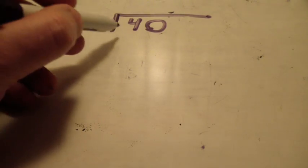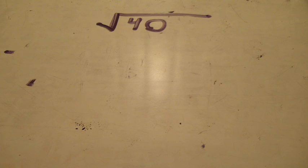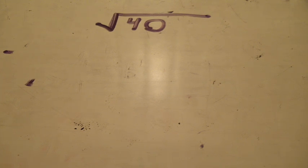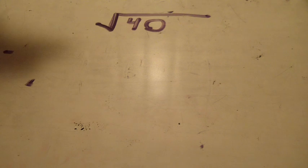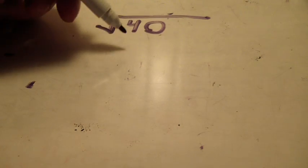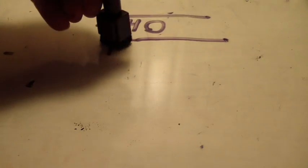First of all, we have something that says the square root of 40. We can't get a perfect square out of that. Now, if it was 49, we know that 7 times 7 is 49, so the square root would be 7. If it was 36, the square root of 36, we know it was 6. But it's not a perfect square, so we can't figure it out without a calculator or with this other option I'm going to show you.